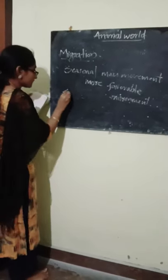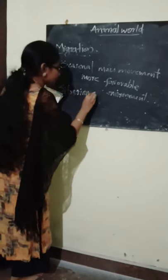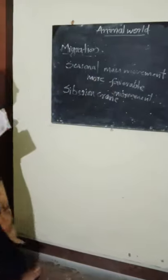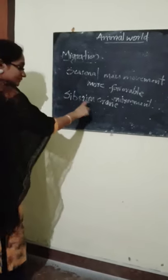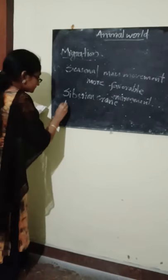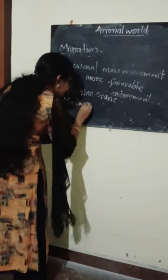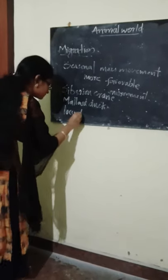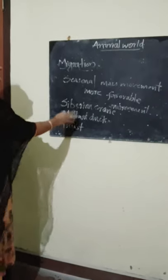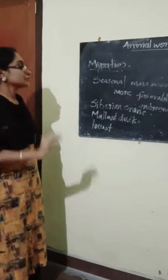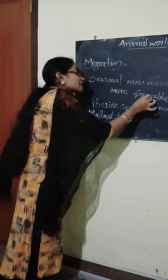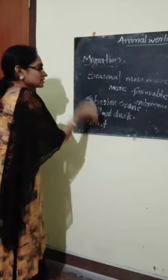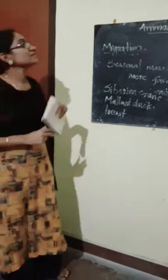Which are the animals that do migration? Siberian Crane — this is one of the birds that makes migration. The next is Mallard Duck — another bird. Then there is Locust. All these creatures migrate from one place to another to find a more favorable environment. Please remember the names of these creatures.